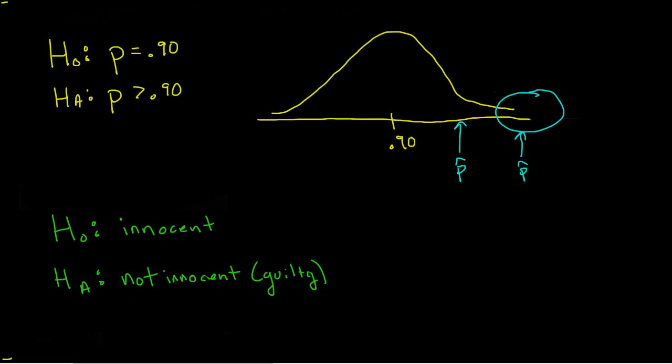A better way of maybe understanding this is by doing something a little bit less statistical. For example, we have a guy who's on trial for a crime. And the null going into the trial is that he is innocent. And the alternative is that he is not innocent, which means he's guilty.